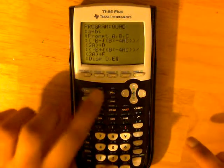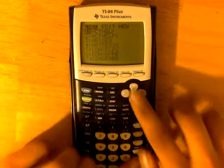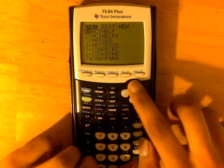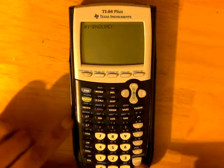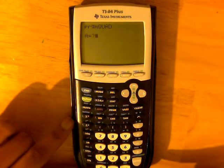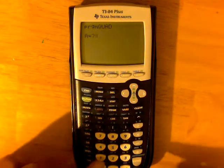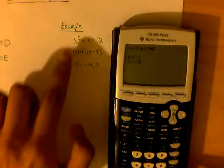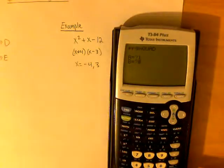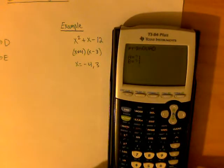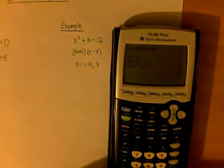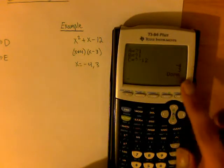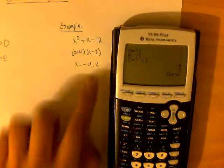So, now just do Second Quit, and let's try it out. So, let's go to Quad, click Enter, and I'm going to be entering in this is the example I have. So, I'm going to be entering in 1 for A, and then 1 for B, and then for C, negative 12, and our answer is negative 4 and 3, and here our answer is negative 4 and 3.